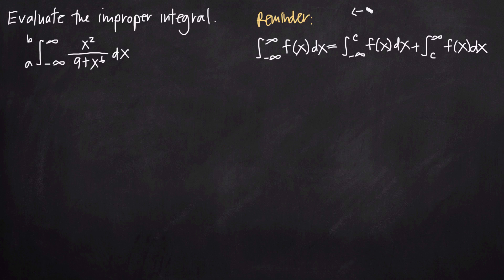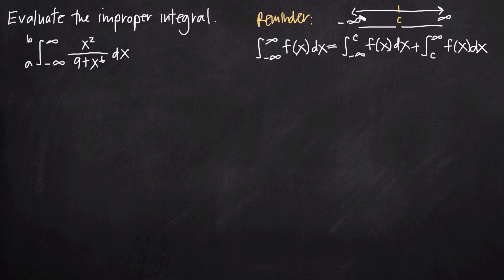If you imagine a number line, our original integral tells us that we're evaluating from negative infinity to positive infinity — the entire number line. Our formula tells us that we are going to split this interval at some point c. This first integral evaluates from negative infinity to c, and the second integral evaluates from c to positive infinity, so we're evaluating over the entire interval, just broken into two pieces.